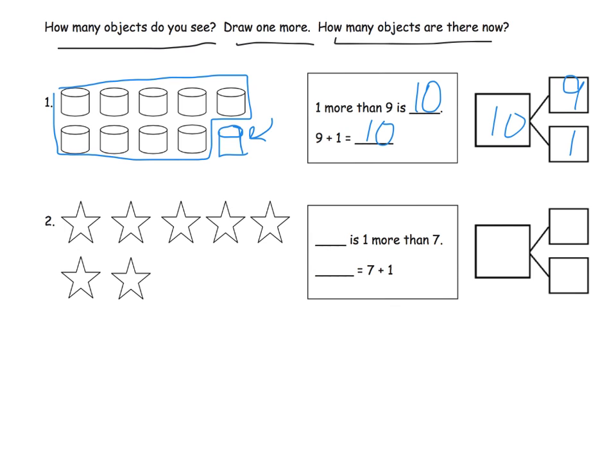So let's continue practicing. We see right here we've got five stars here. We're going to count on six, seven, so we have seven stars all together. But then we need to draw one more star.